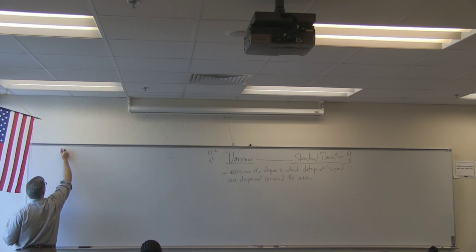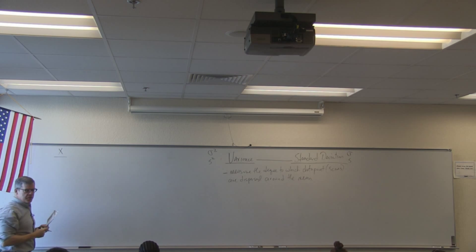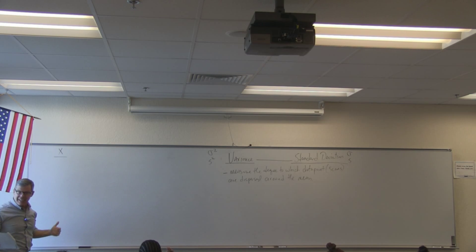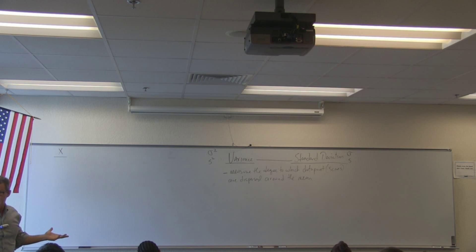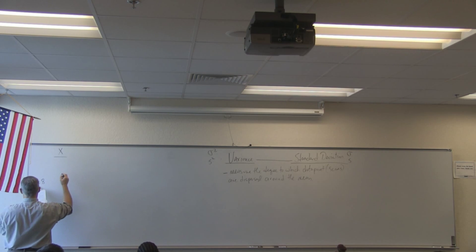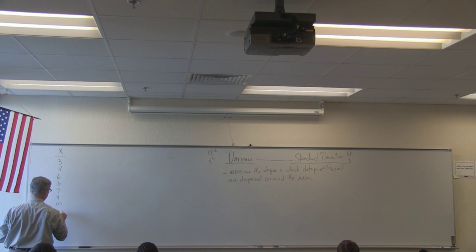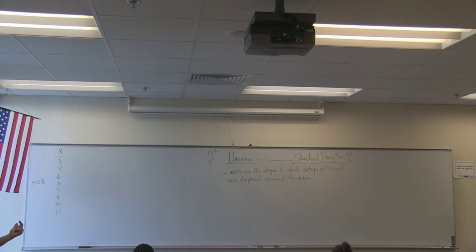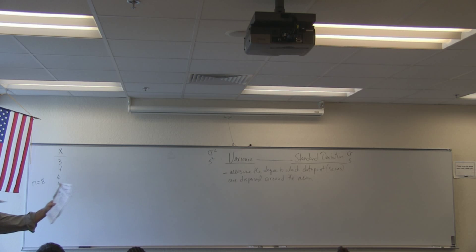Let's suppose we have a data set we'll call X — this is a variable. What kind of variable is it? It's a dependent variable. Any data set that we analyze is a dependent variable. In this case, let's suppose we have eight numbers, and suppose these numbers represent some ratio-scaled data like inches or feet. One characteristic of the ratio scale is that we have a true zero point.